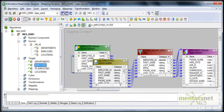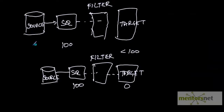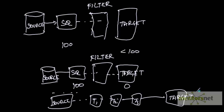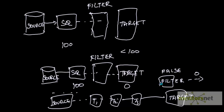Now let us see one more interesting variation of the filter transformation. Suppose you may have a requirement to load zero records to the target — just to see how Informatica is performing till the source qualifier. You can have a scenario like this: source, then n number of transformations T1, T2, T3, and then a target. You have a performance bottleneck in your mapping somewhere but you don't know exactly where it is. What you can do is put a filter transformation with a false condition — it will give zero records after that point, stopping the flow there.